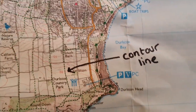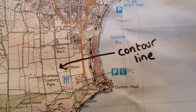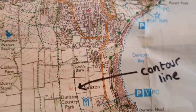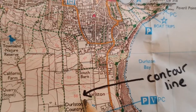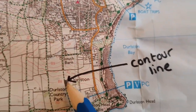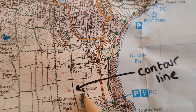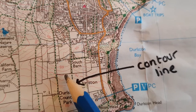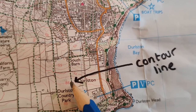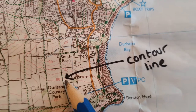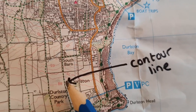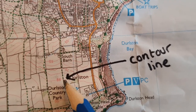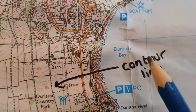Welcome to Geography Gen. This session is going to be all about using OS maps and what contour lines are. You should be able to see this little reddy-brown line here, and lots of them on the map. What these show is the height of the land above sea level, recorded in metres. So this little bit of land here is 88 metres above sea level. These little lines are called contour lines.